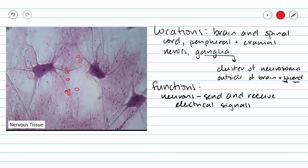All of these little purple dots that we see scattered throughout the tissue — all of those little purple dots — those are our neuroglia. Our neuroglia are going to be non-conductive, supportive cells that have a wide range of functions that we will cover specifically when we cover the nervous system.